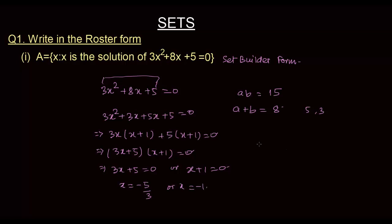So, in the roster form, I can write my A as A is {-1, 5 upon 3}. Minus 5, minus 5 upon 3. Yes. This is -5/3.